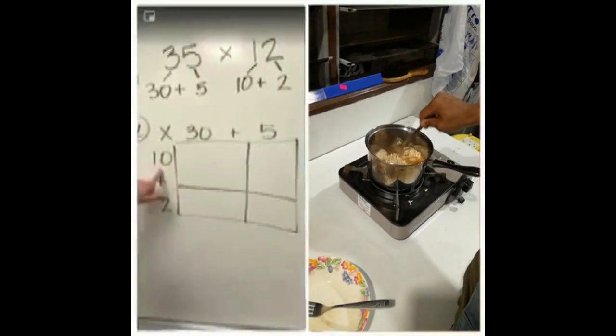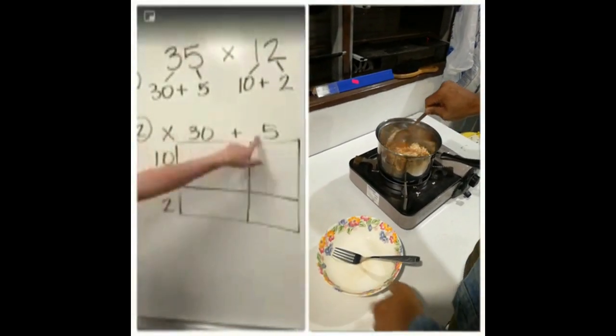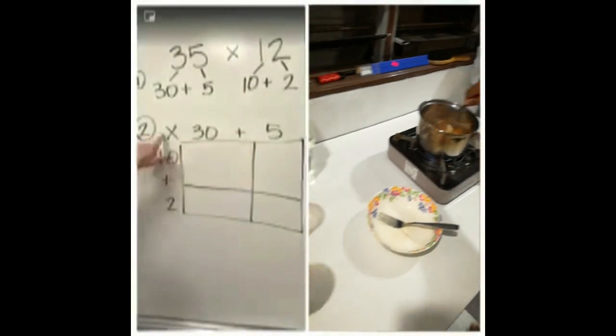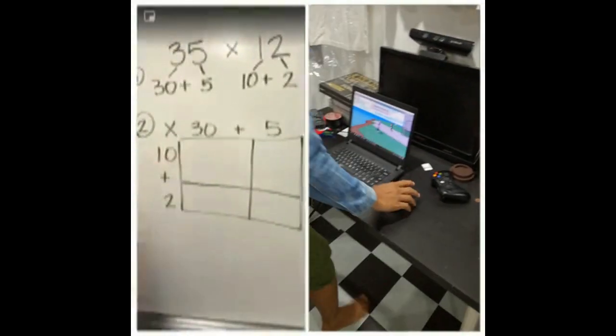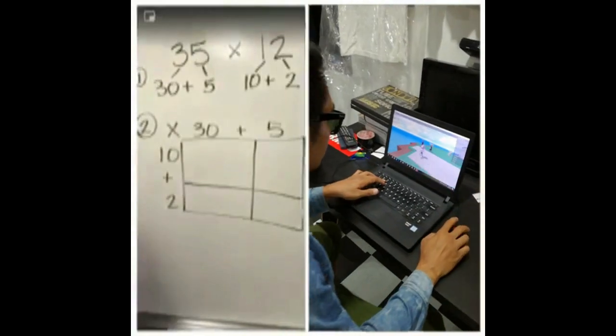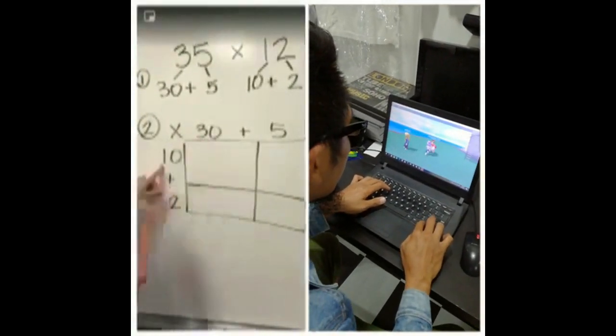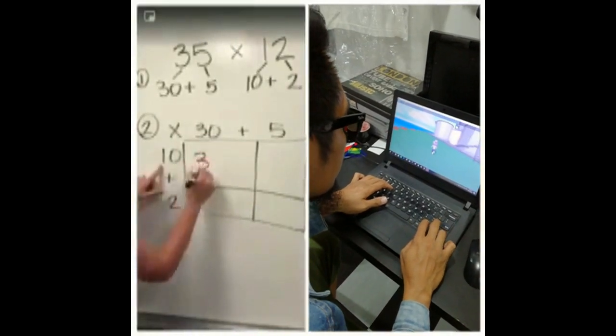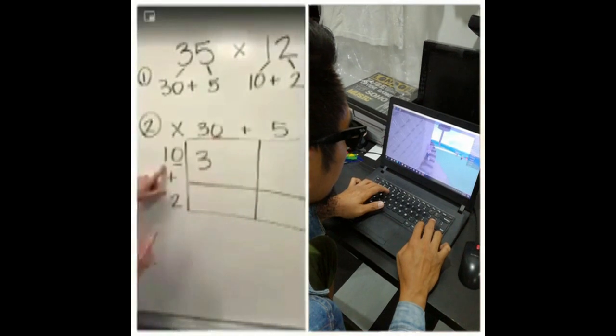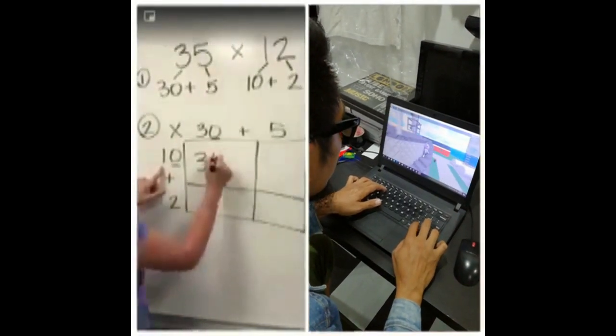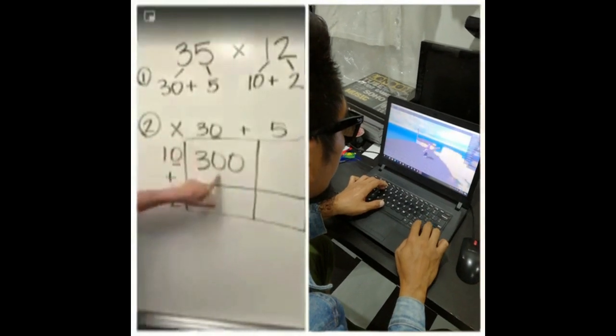Starting with our very first number on the top, we say 10 times this, 10 times that. So first, we're going to do 10 times 30. Sometimes it gets a little tricky when we have those extra zeros on there when we're multiplying by a 10, so I like to say 1 times 3 is 3, and how many zeros do we have? We've got 2, so we attach them to the end of the number. So 10 times 30 is 300.